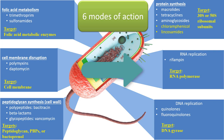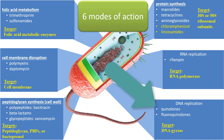The fifth mode of action involves inhibition of RNA replication by targeting RNA polymerase — bacterial RNA polymerase differs from that in our cells. The sixth mode of action targets DNA replication: bacteria have a protein called DNA gyrase, whereas our cells have topoisomerase. These two proteins have the same function but are structurally different, allowing drugs to specifically target the bacterial version.